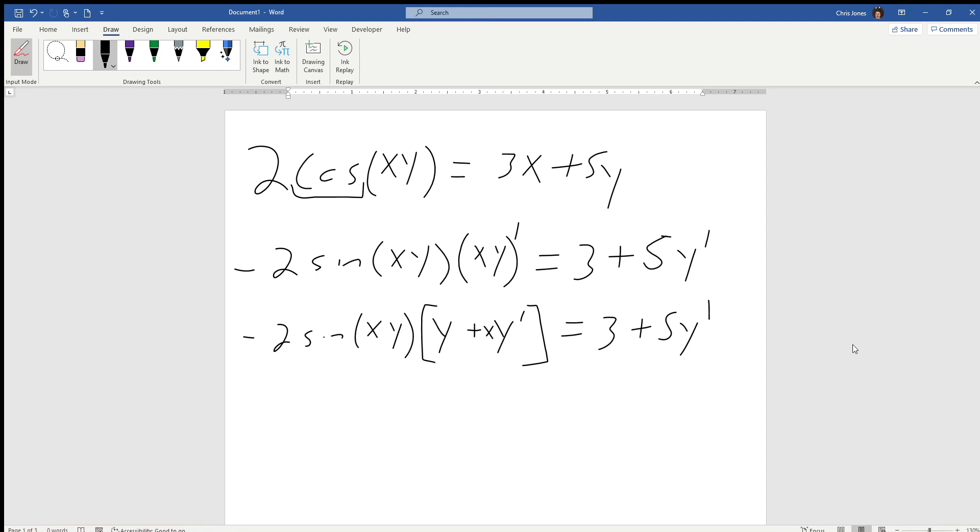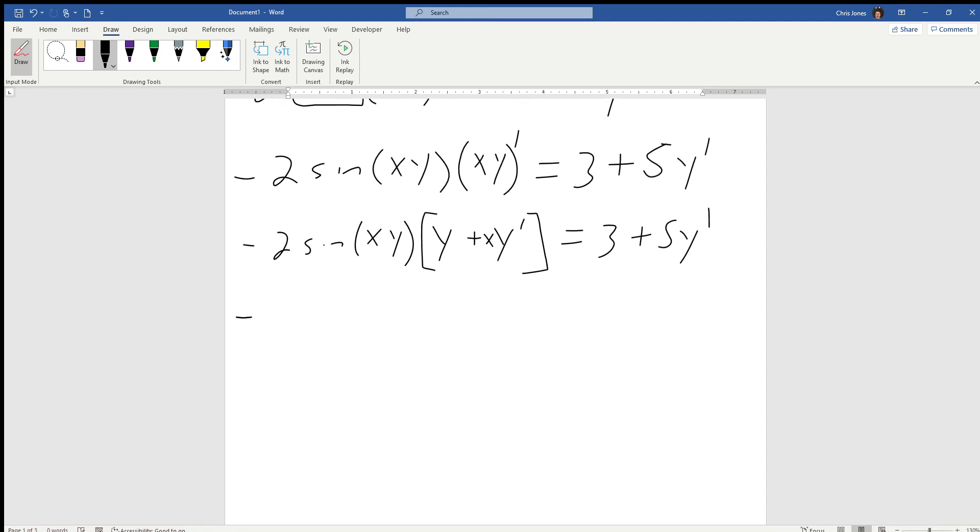Now we're going to distribute and solve for y'. We get negative 2y sine xy – the y is already factored in there – minus 2xy' sine xy equals 3 plus 5y'.